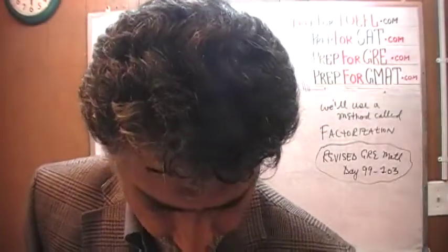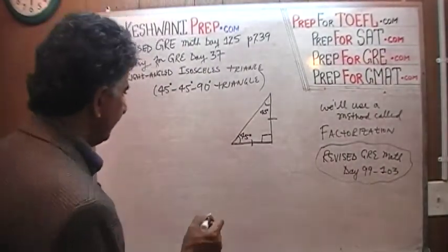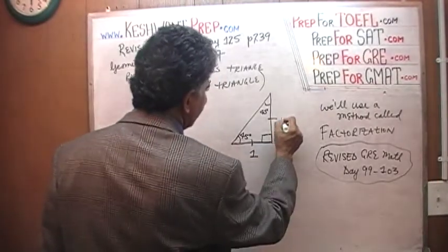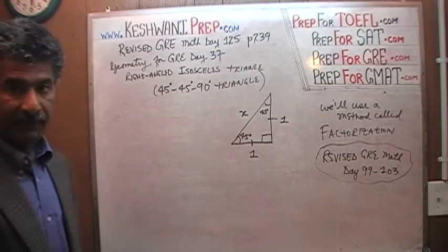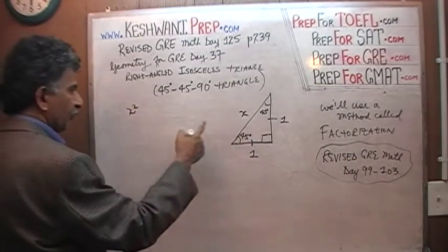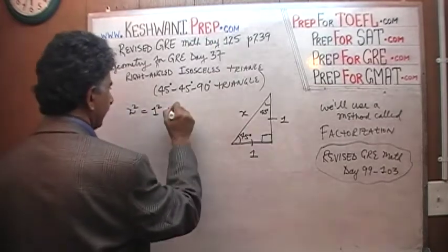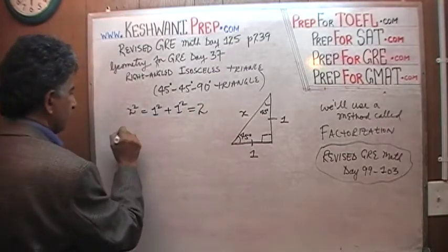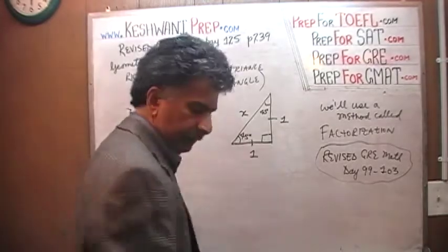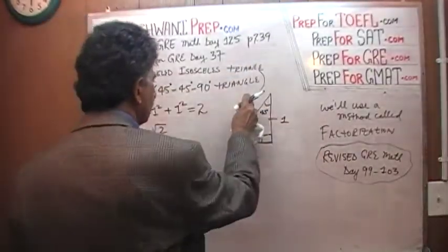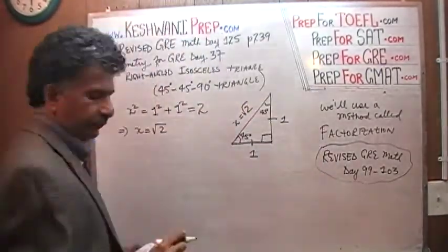This is called a 45-45-90 degree, or right-angled isosceles triangle. Let's pretend this side is 1, and therefore that side is going to be 1. Let's find out what this side is, the hypotenuse, by using the Pythagorean theorem. The square of the hypotenuse equals the square of this side plus the square of that side, which of course is 2, which implies that x here must be root 2. X equals root 2.